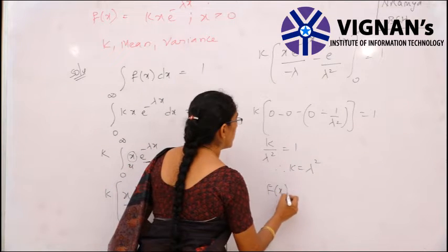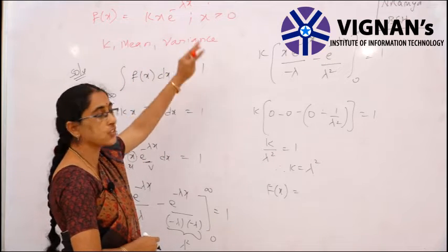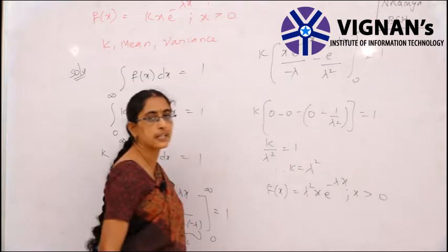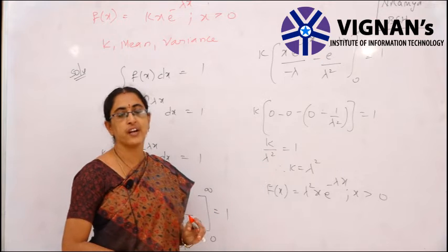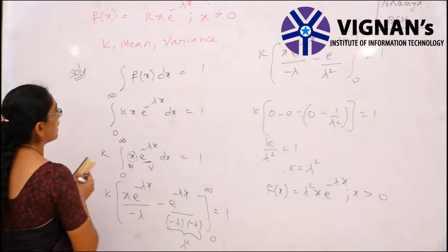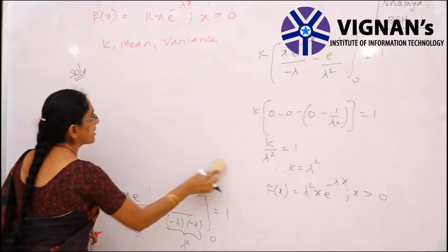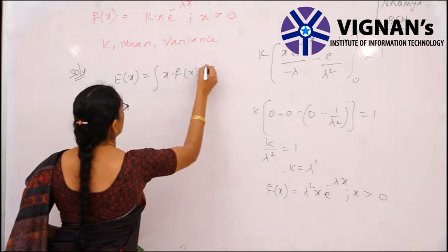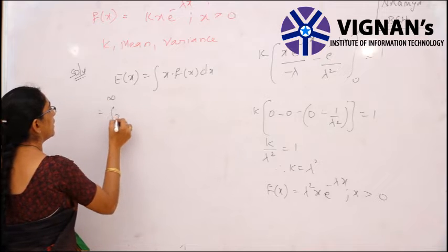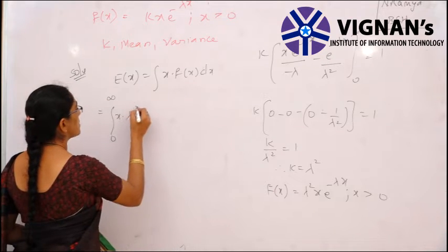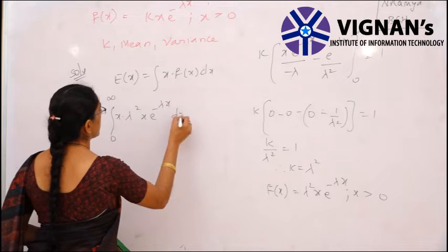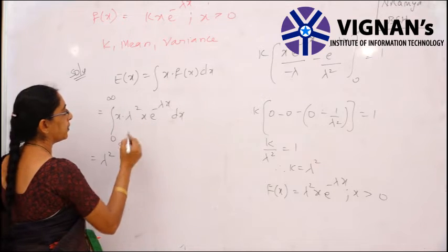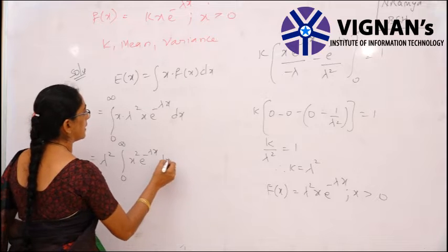Now find the mean. For a continuous random variable, mean = E[X] = ∫₀^∞ x·f(x)dx = ∫₀^∞ x·λ²·x·e^(-λx)dx. Bringing λ² outside: λ²·∫₀^∞ x²·e^(-λx)dx. Apply the uv integration formula again, letting u = x² and v = e^(-λx).